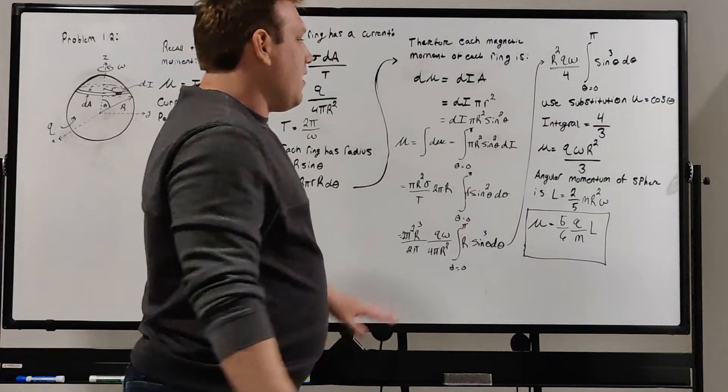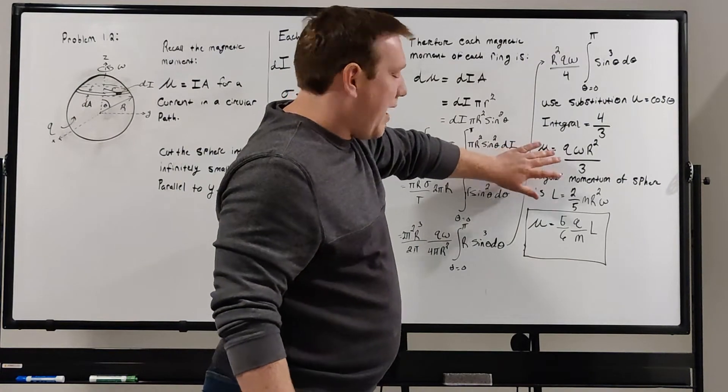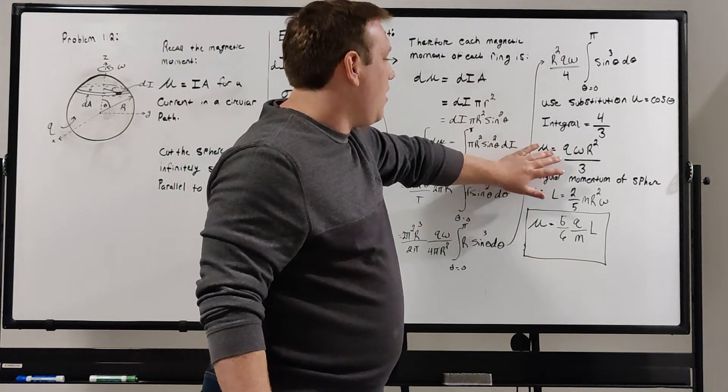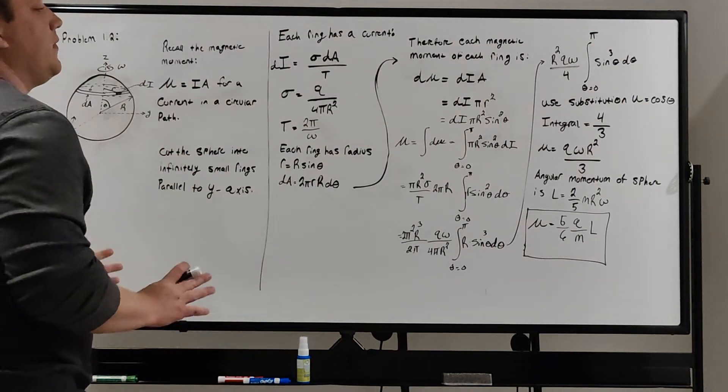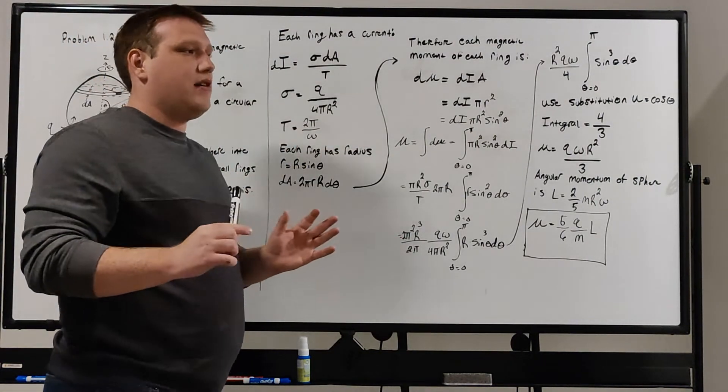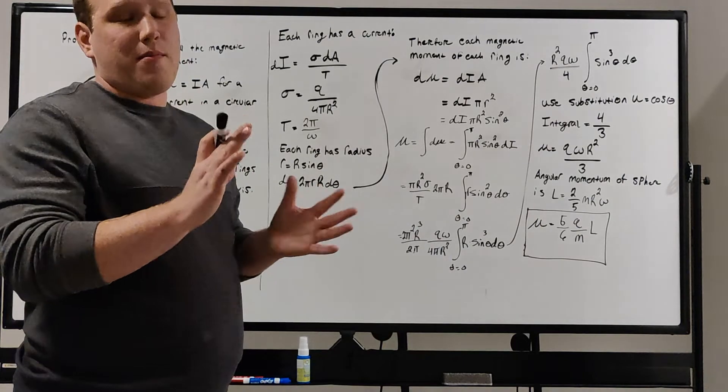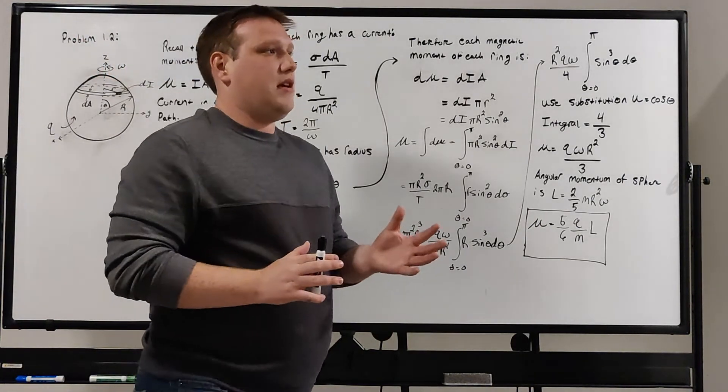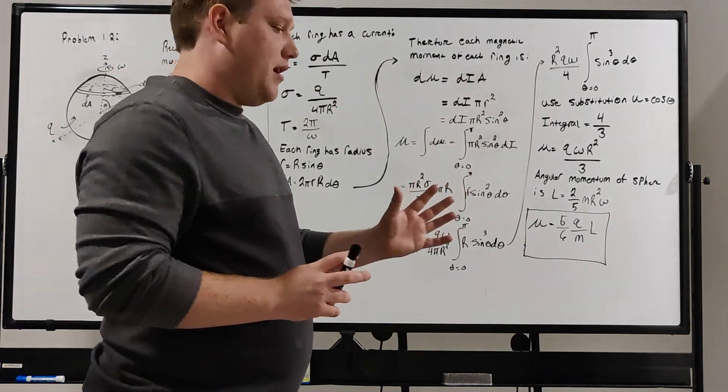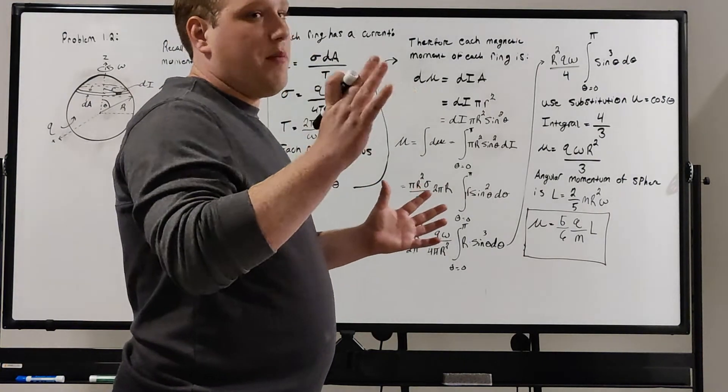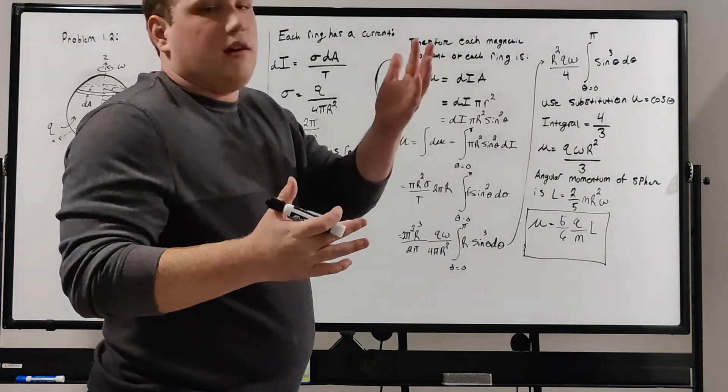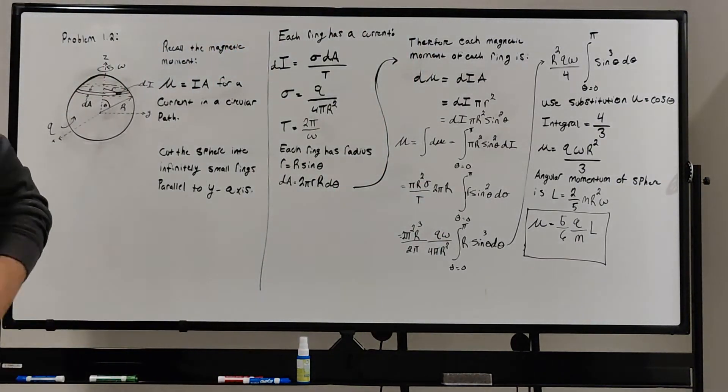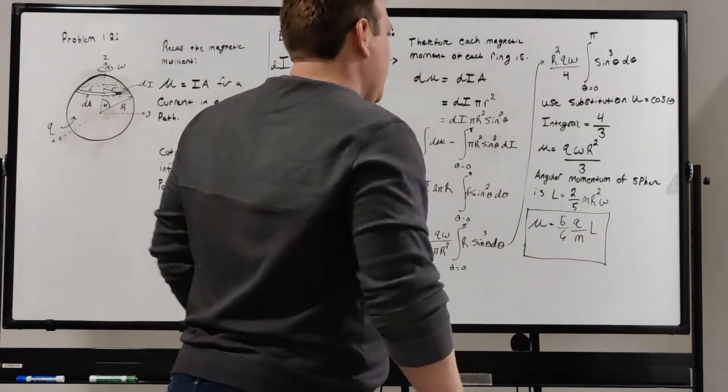We have the total magnetic moment of the sphere now, of the rotating sphere. That's awesome. How then is it related to the angular momentum? That's what we're trying to show, is that the magnetic moment is related to the angular momentum by this relation 5 sixths Q over M without the C.